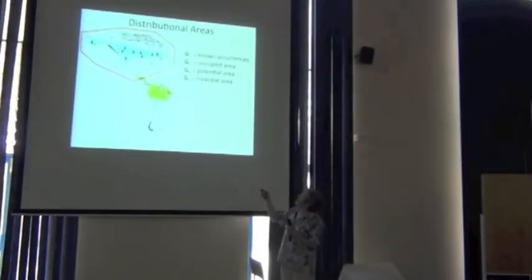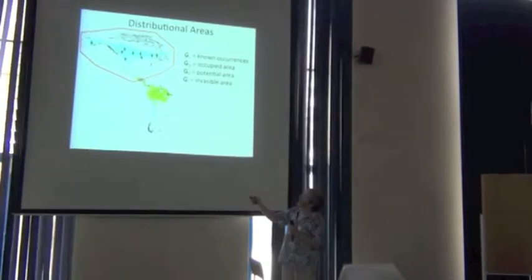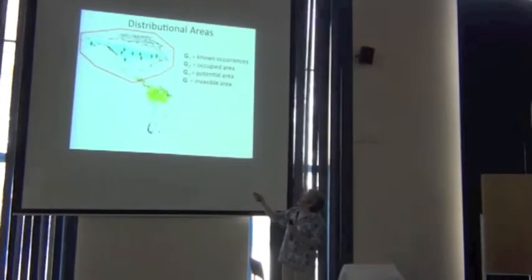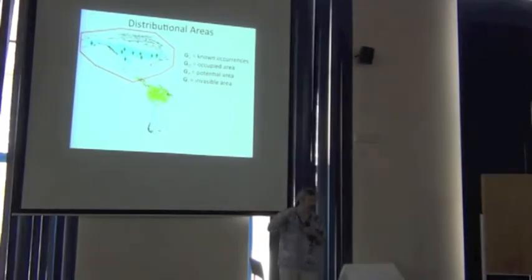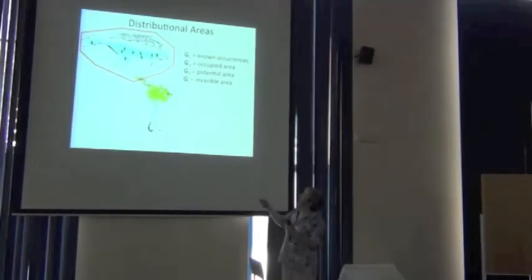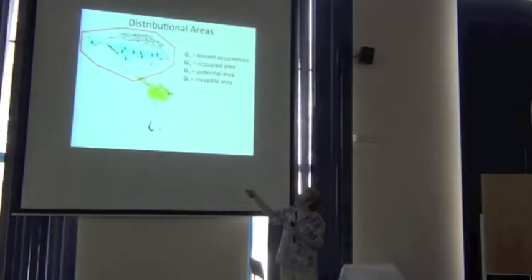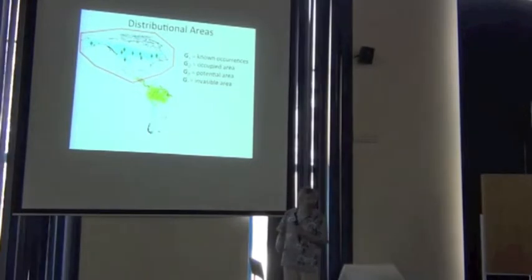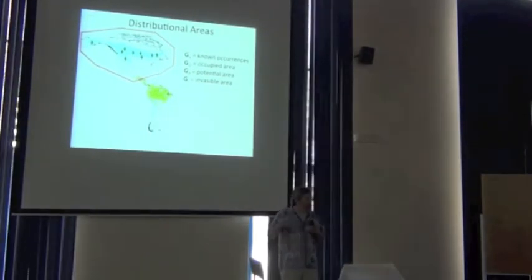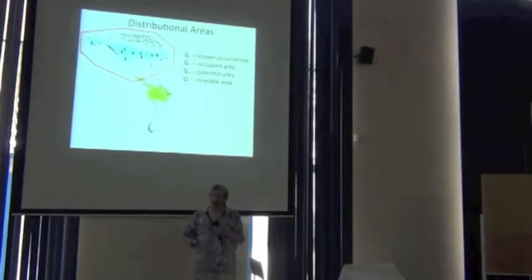And so, we have occurrence points, which we call G plus. Those are those crosses. We have G O, which is the suitable area, which is also accessible. We have G P, which is the entirety, the potential area. And we have G I, which would be this area, which is the invasible area. So, that just gives us a little bit of distribution terminology to go along with our niche terminology.